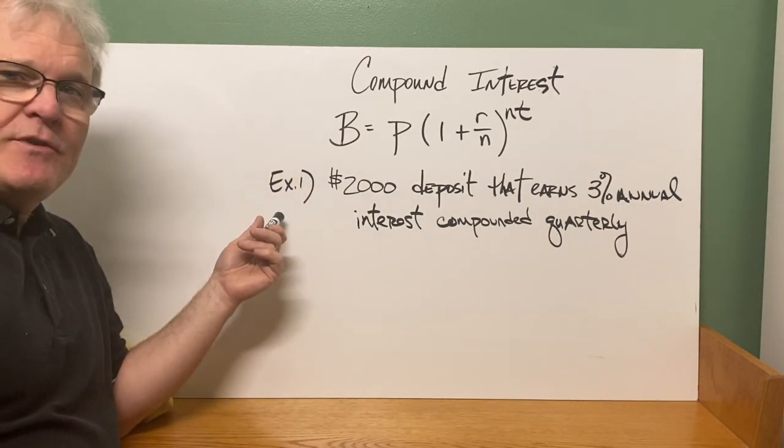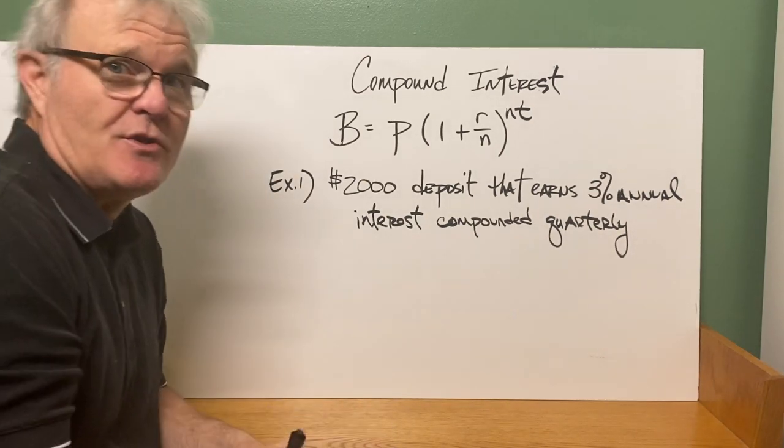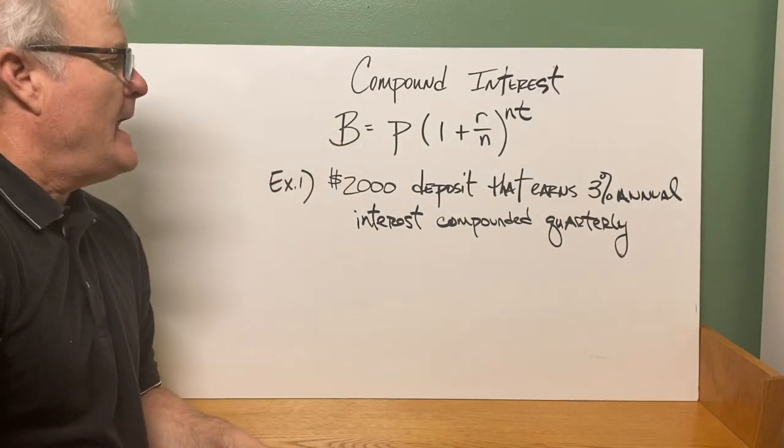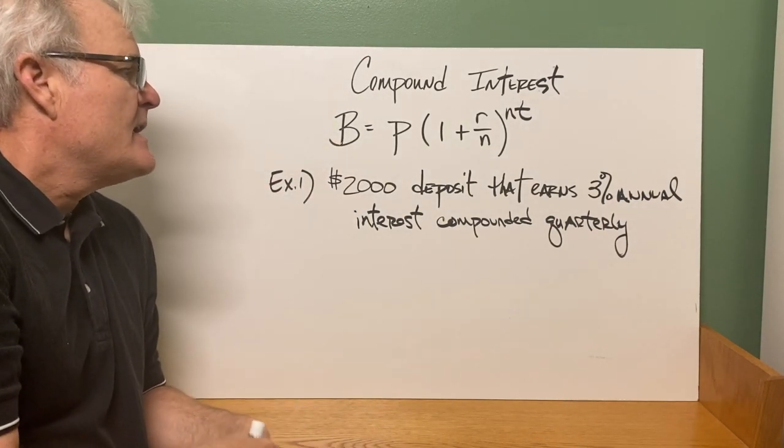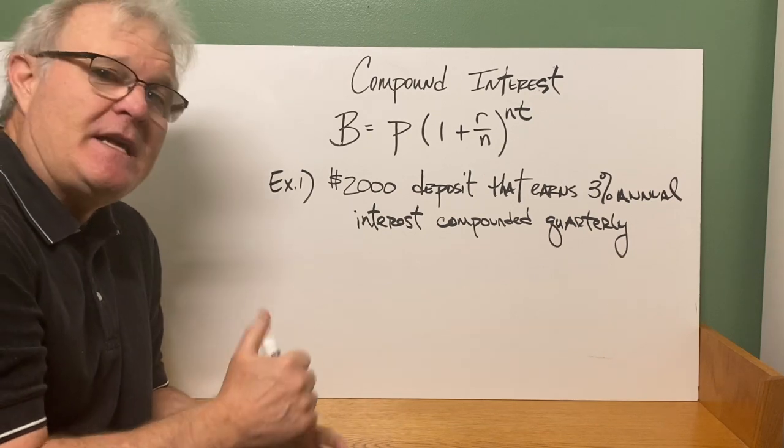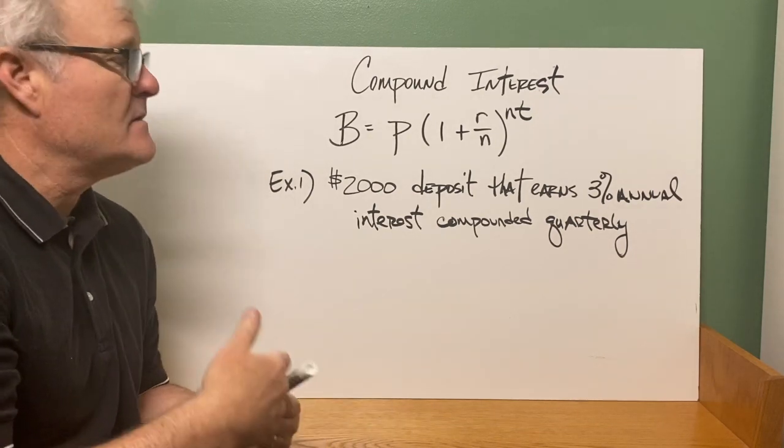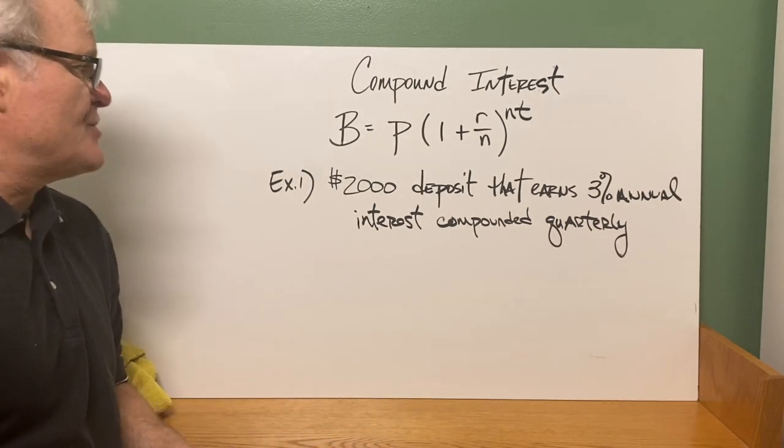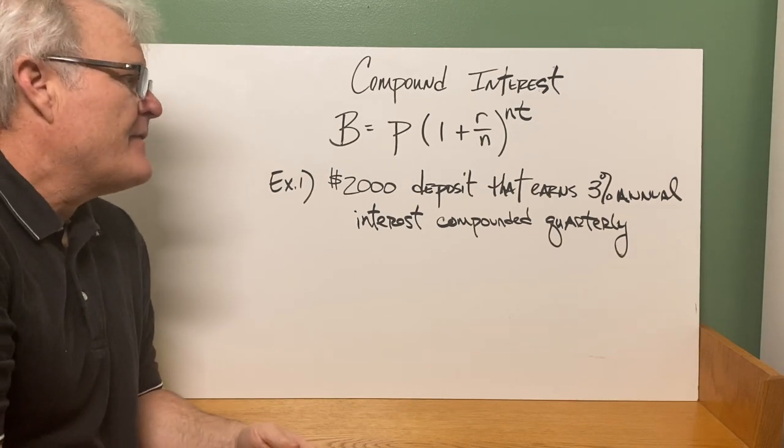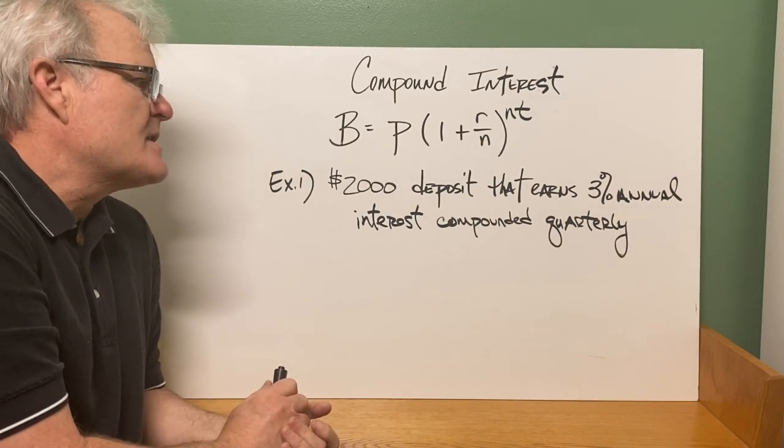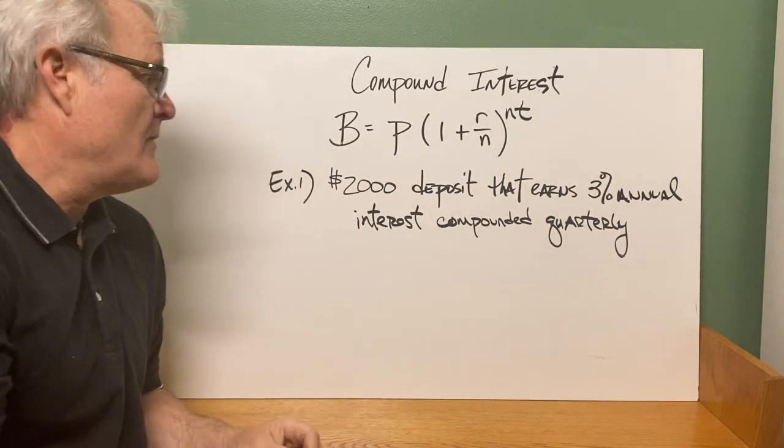Now let's take a look. I've given you an example here that is similar to the ones in the book. And it would read, the ones in the book are saying, give the equation after T number of years for something like this. $2,000 deposit that earns 3% annual interest compounded quarterly.